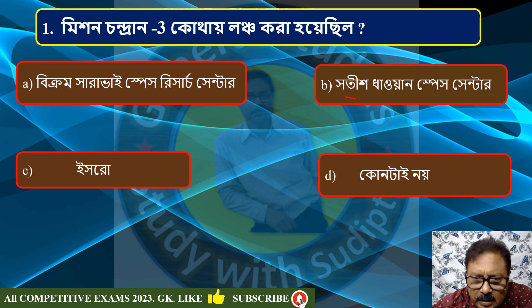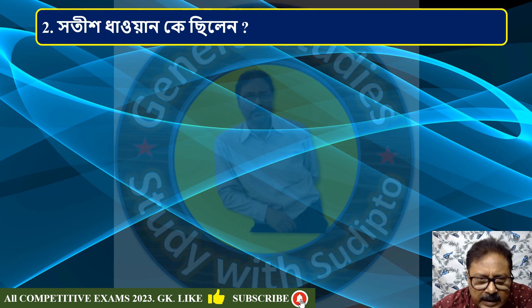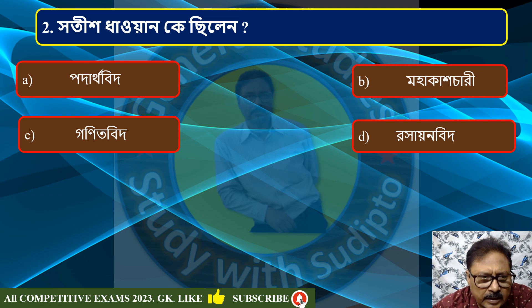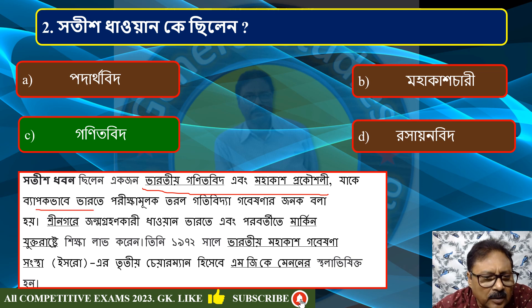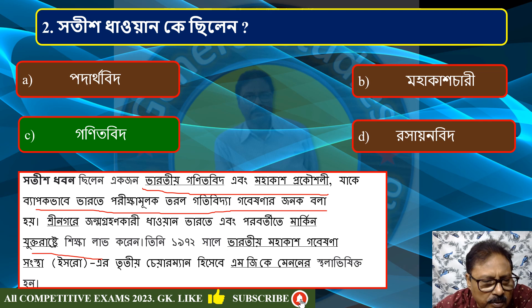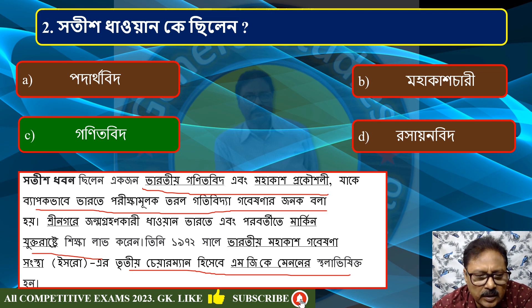What was the name of Satish Dhawan Space Center? Satish Dhawan was the third chairman of ISRO. The launching station was named after him. It is also known as the British Pace Research Center.